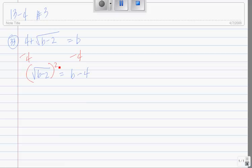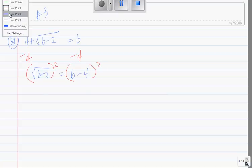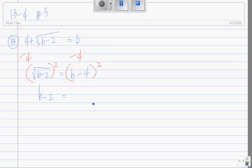That was Michael Nasr. End up with b minus 2 equals what? Get up. FOIL. Come on, FOIL.